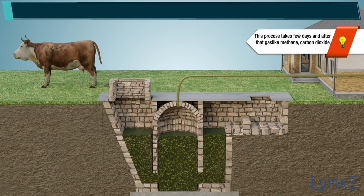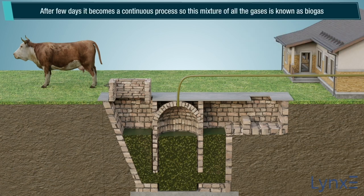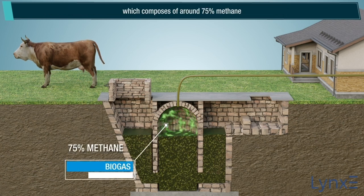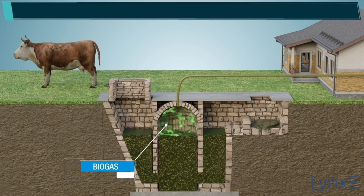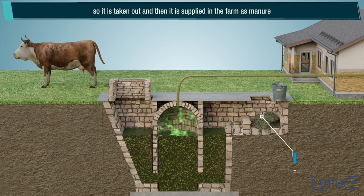This process takes a few days, and after that gases like methane, carbon dioxide, hydrogen, and hydrogen sulfide get released. After few days it becomes a continuous process. This mixture of all the gases is known as biogas, which is composed of around 75% methane. The slurry left out after decomposition is very rich in nitrogen and phosphorus, so it is taken out and supplied to farms as manure.